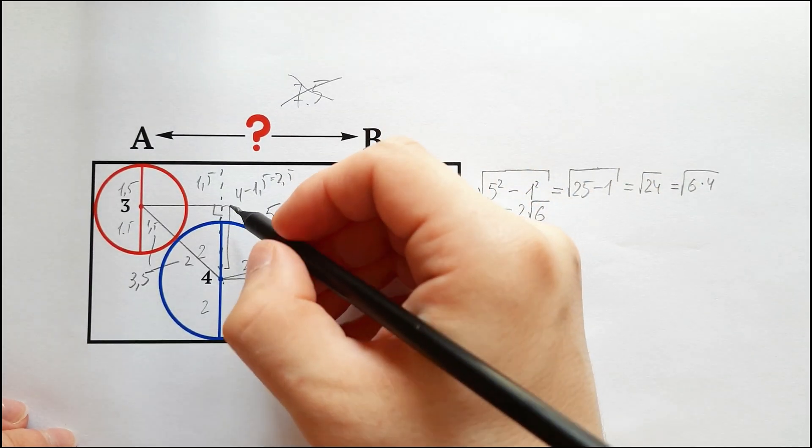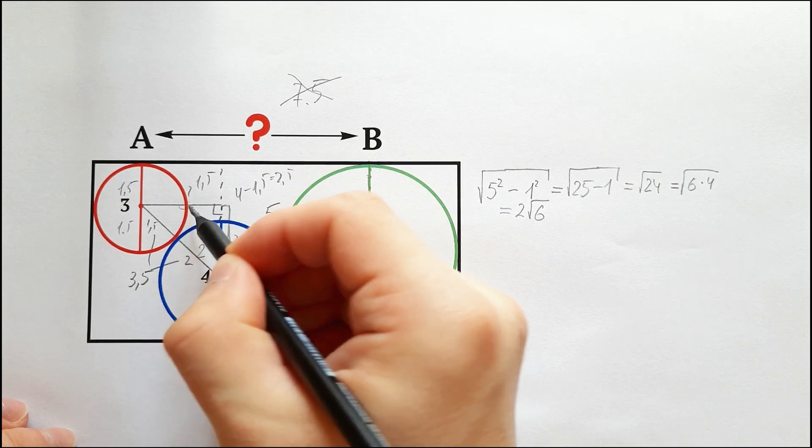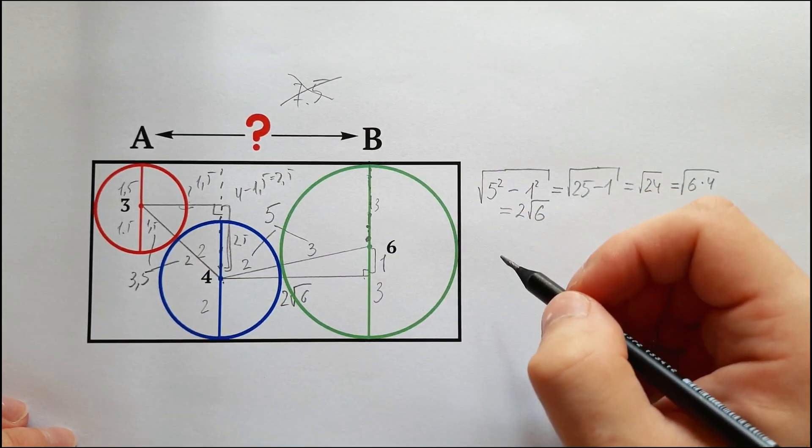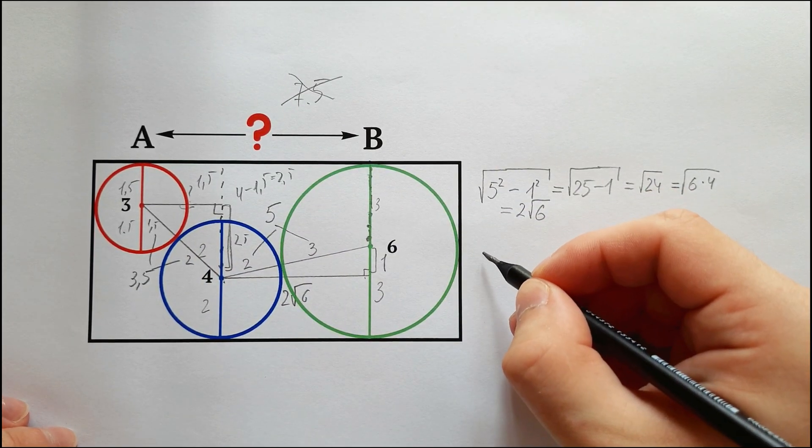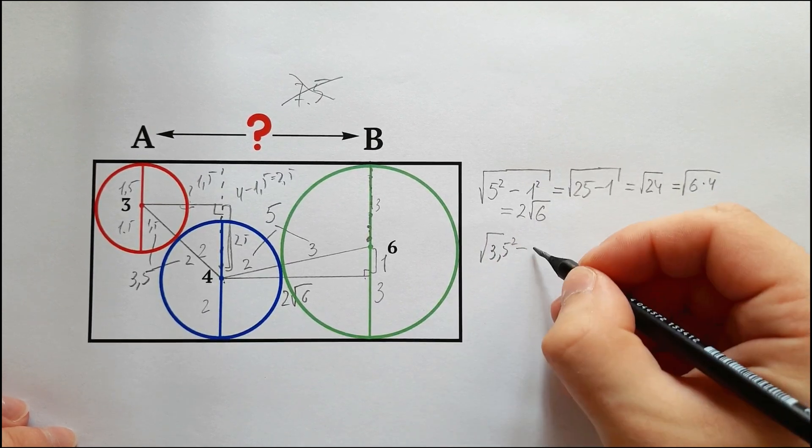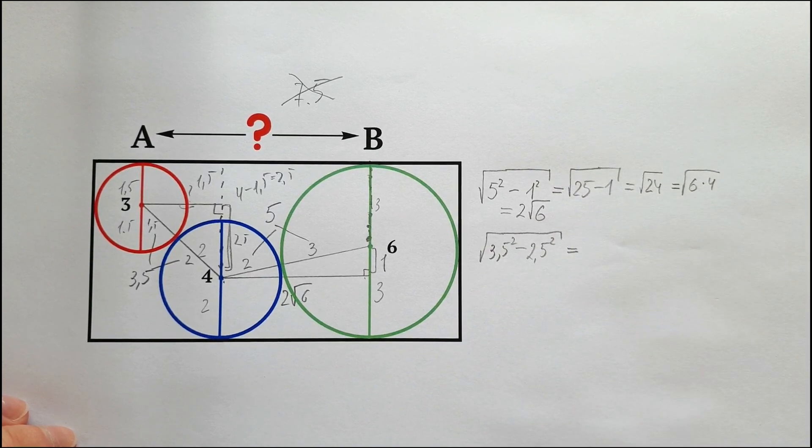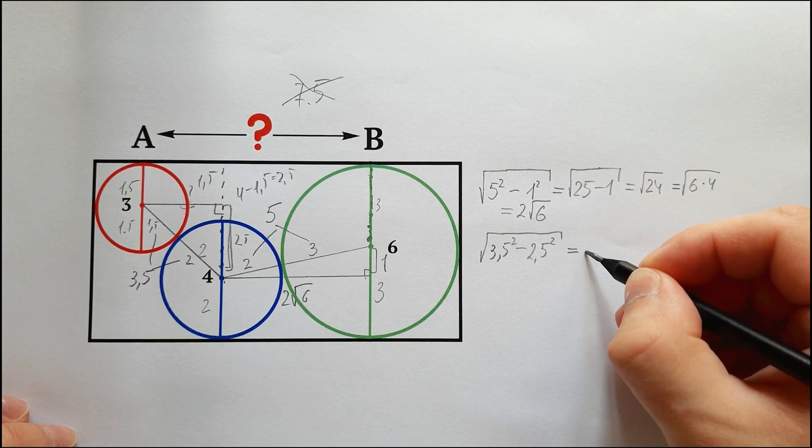To find the distance AB, we need to find this side of the right triangle. Again we apply the Pythagorean theorem: 3.5 squared minus 2.5 squared, and we take the root from all of this. Don't be harsh if I use a calculator here. We get a square root of 6.